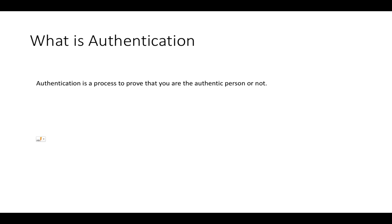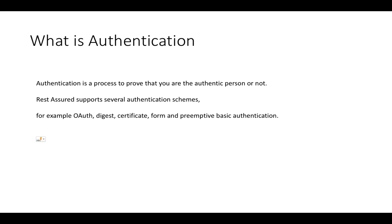Authorization is when you log into your Google account — you have multiple products like Gmail, YouTube, Google Drive. Google also has certain paid products like Google AdWords and Google Search Places. Once you pay some amount, only then can you access those particular products. So you are an authentic person but you are not authorized to use that particular product. We'll also talk about authorization later, as it has different protocols. For now, we'll focus only on authentication.